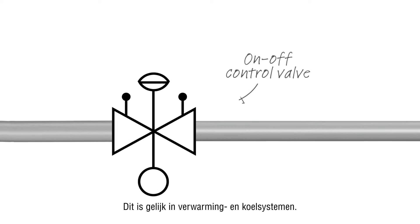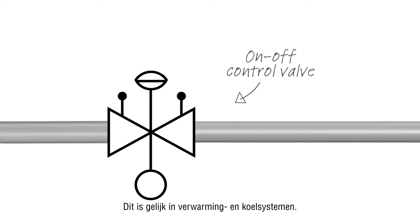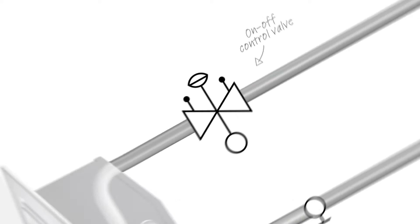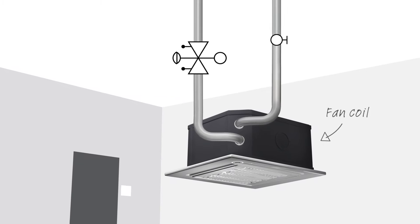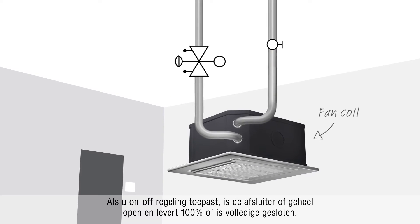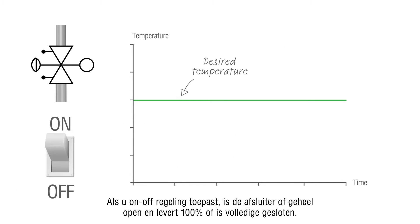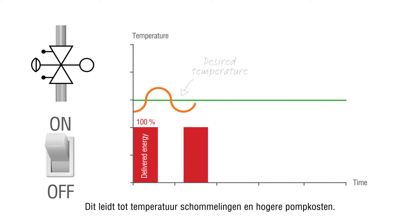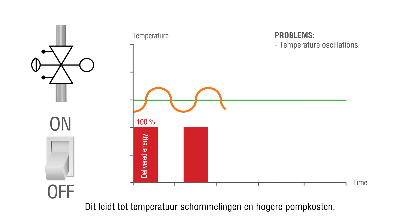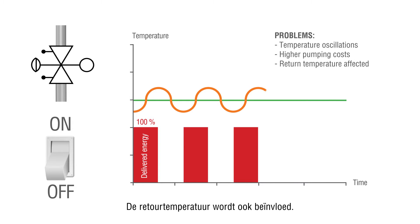Similarly in heating and cooling systems, if you use on-off control, the valve is either fully open and delivers 100% flow or fully shut. This leads to temperature oscillations and higher pumping costs, and the return temperature is also affected.